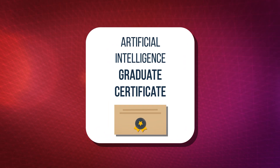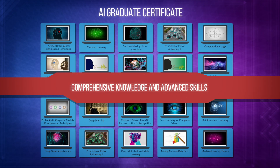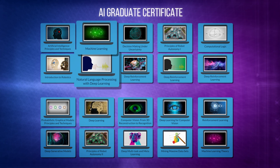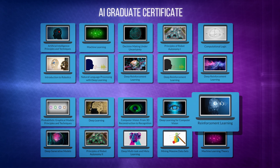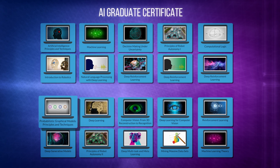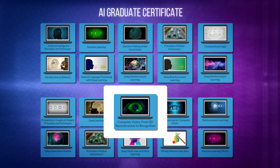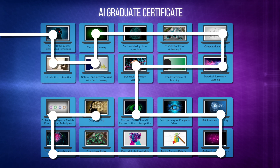The Artificial Intelligence Graduate Certificate is a series of graduate courses that provide comprehensive knowledge and advanced skills in the principles and technologies that underlie AI, including natural language processing, machine learning, deep learning, reinforcement learning, and probabilistic graphical models. With electives such as computer vision and robotics, you can choose a path tailored to your interests.